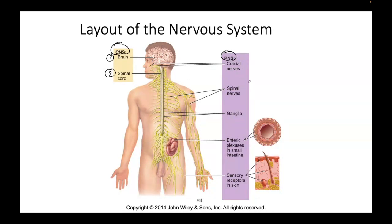So if we're talking about cranial nerves, those are nerves that come off the brain — that's the peripheral neural system. If we're talking about spinal nerves that come off of the spine, that's also part of the peripheral neural system.